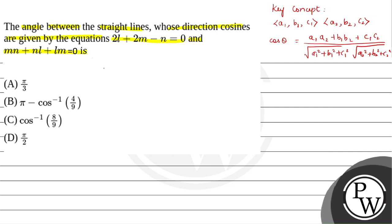We have two equations. The first is 2L plus 2M minus N equals 0, which we can simplify and write as N equals 2L plus 2M. Let us take this as equation 1. The second equation is MN plus NL plus LM equals 0.